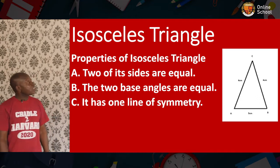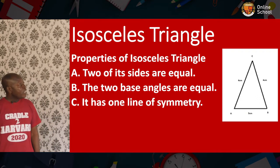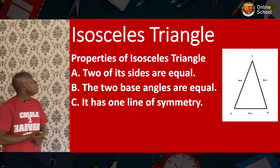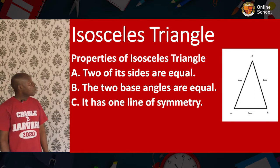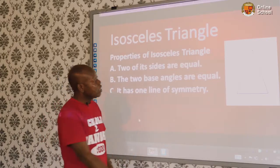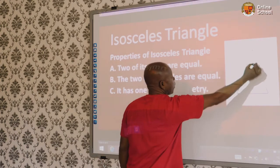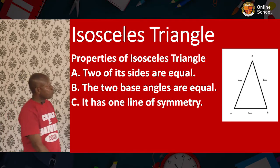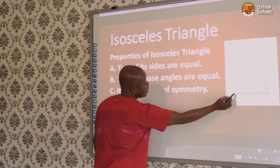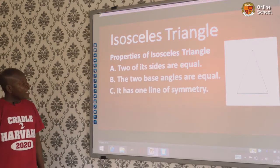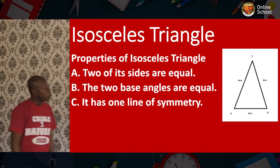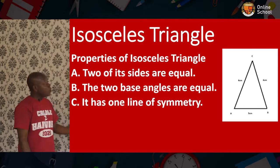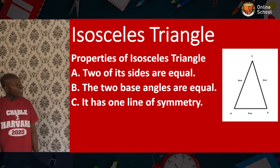Number two is the isosceles triangle. The isosceles triangle has two equal sides. Those are the properties: two of its sides are equal — these two sides here. An isosceles triangle also has two base angles, and the two base angles are equal. It has one line of symmetry, meaning you can only fold it once.